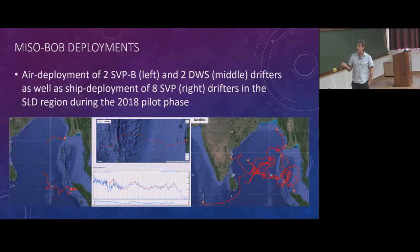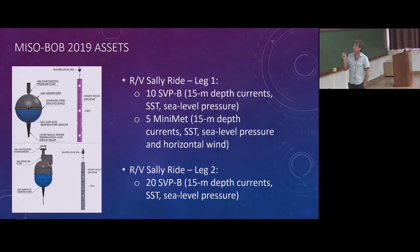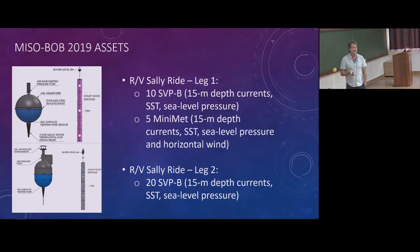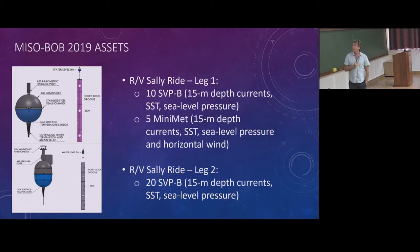Last year we did a couple of air deployments, a couple of wave buoys, and a couple of parameter drifters deployed by Hamanta during his cruise. For this year, the total is 35 drifters — five of those will be minimet drifters that can also measure surface wind. I'm happy to discuss those numbers; we may be able to do a bit more if there is an opportunity.